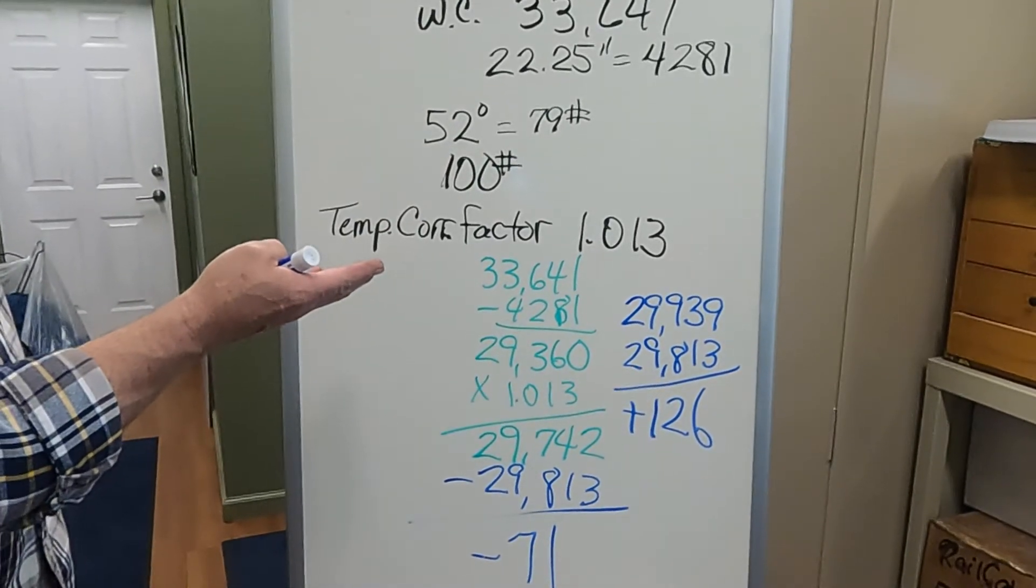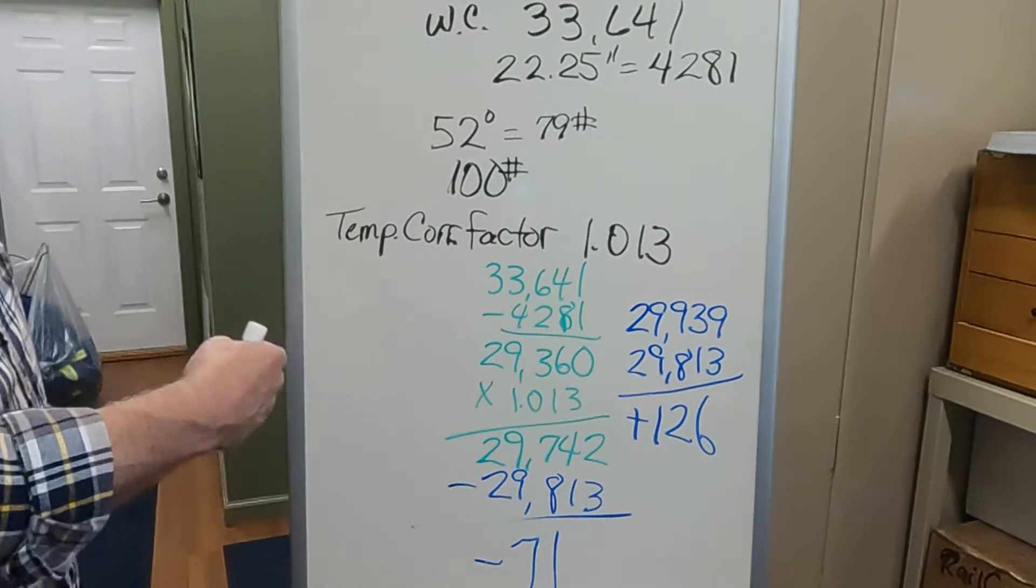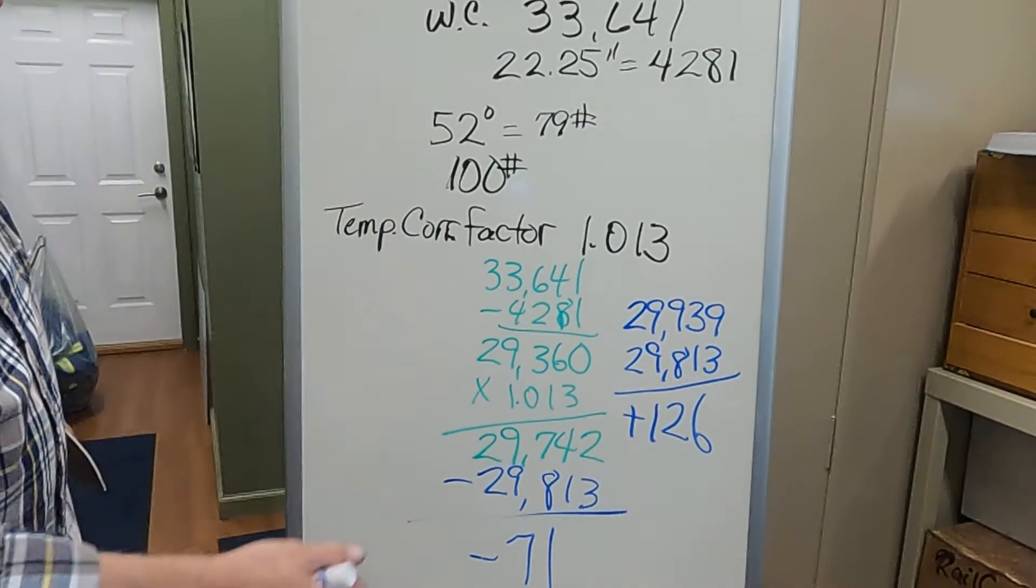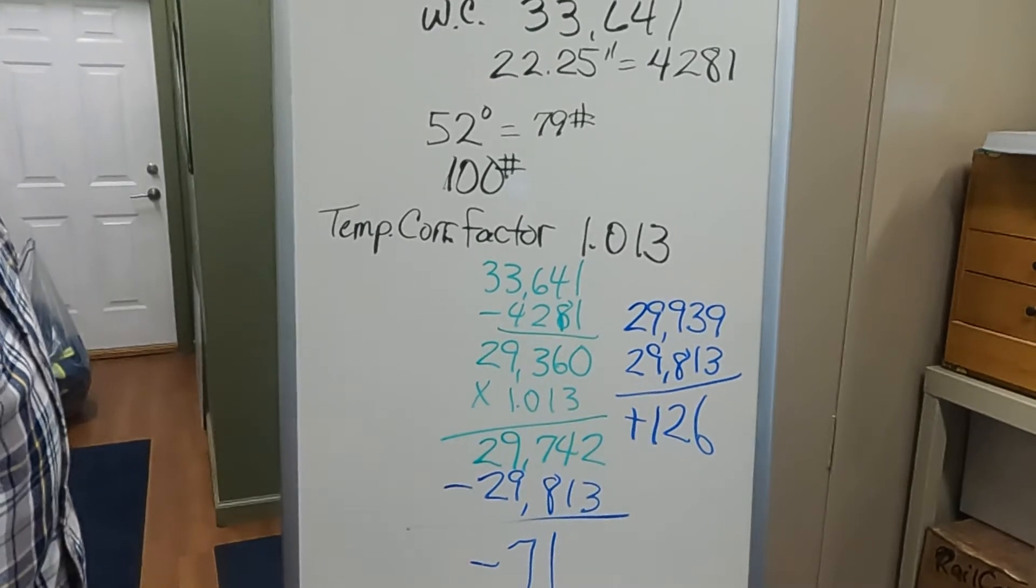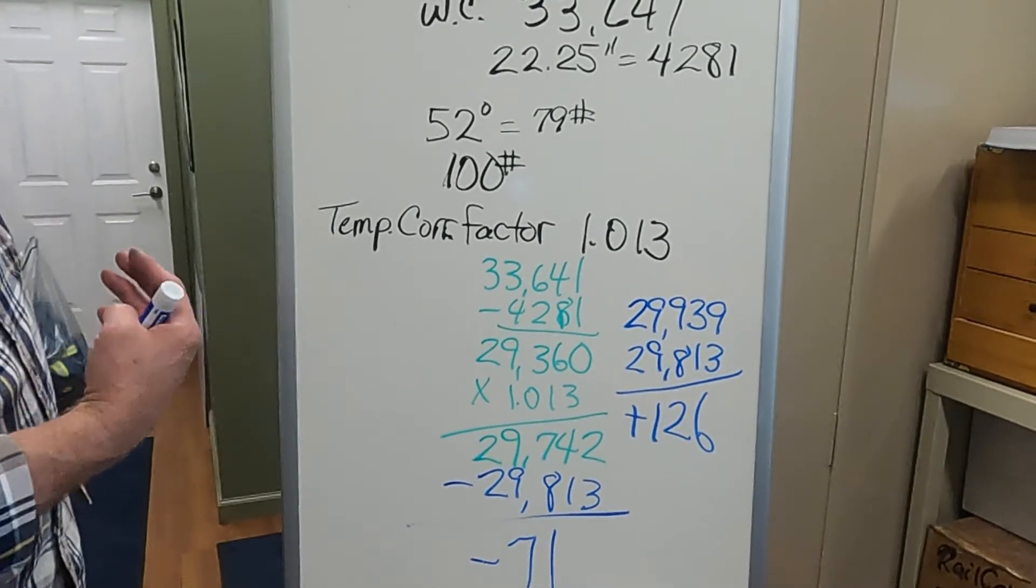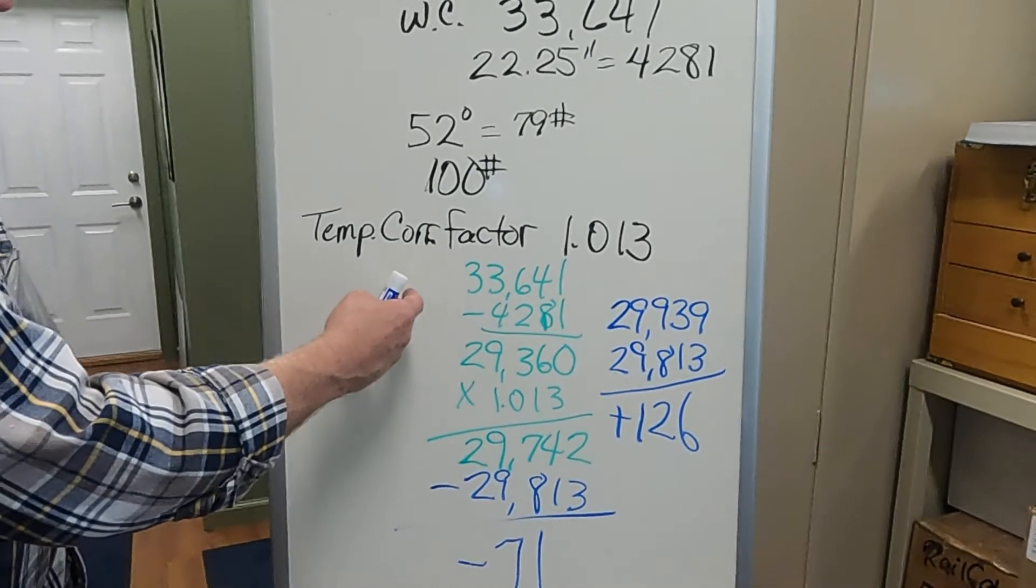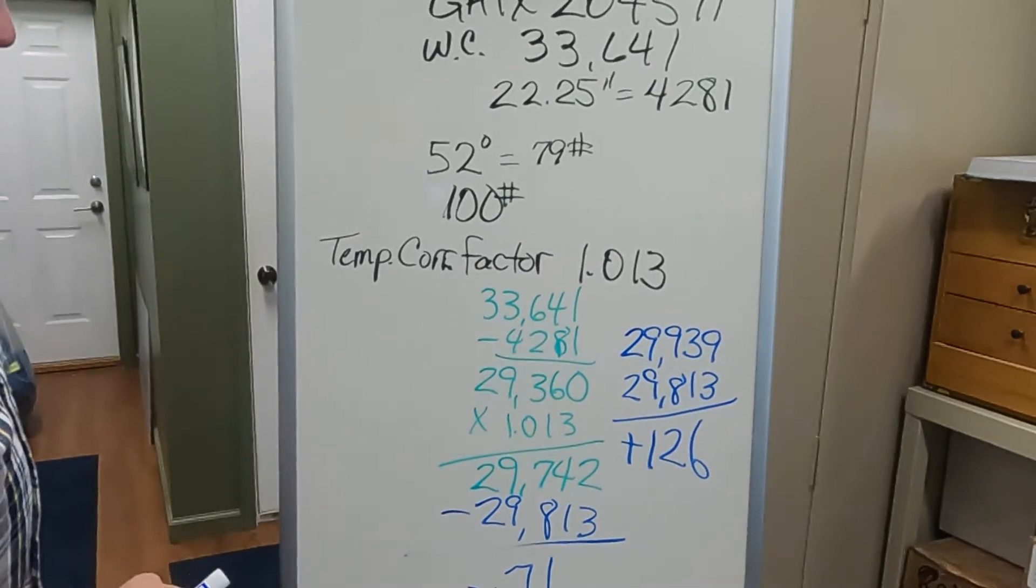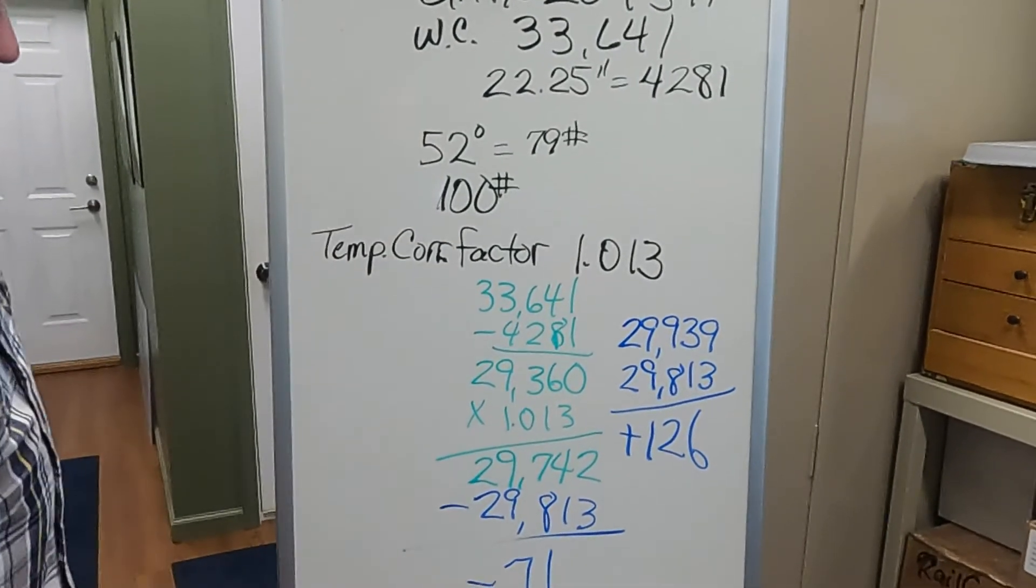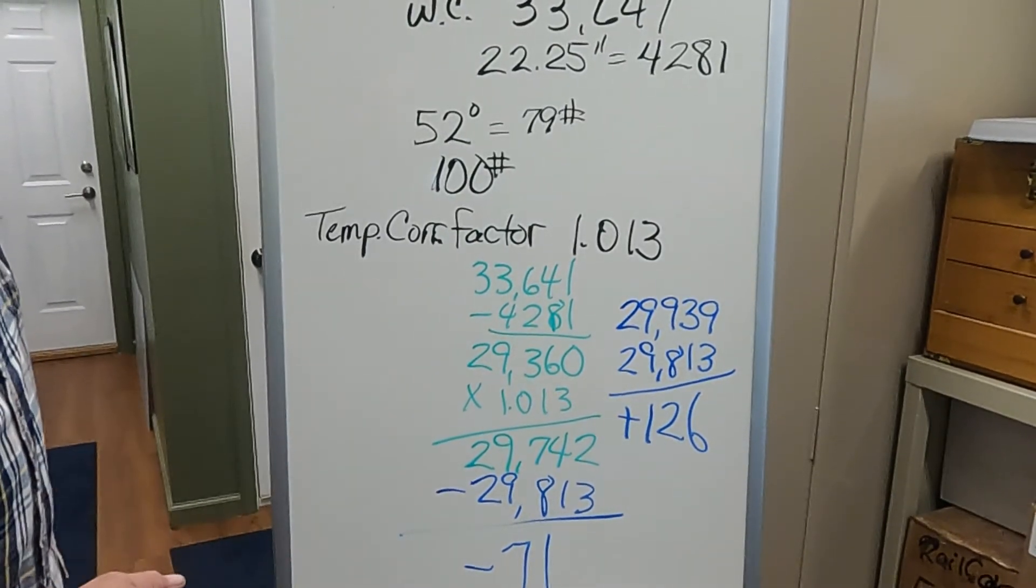you don't have to buy NFPA 58 to get the chart. You can find it on different websites. There's others that have what they consider a more accurate chart number. If you want to, you can try to. I'm not going to do it, but you can try to figure out a more accurate way to measure the vapor space, the actual gallons in the vapor space. But, like I said, basic rail car calculation is your really good number. I encourage you to do it.